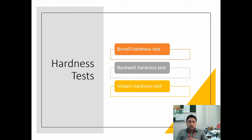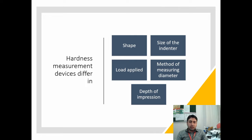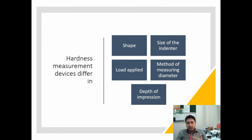We use three tests mainly to find the hardness number: the Brinell hardness test, the Rockwell hardness test, and the Vickers hardness test. Today we will be performing the Vickers hardness test experiment. These hardness tests differ in the shape and size of the indenter, the load applied, and the method of measuring — whether diameter or depth of the impression.